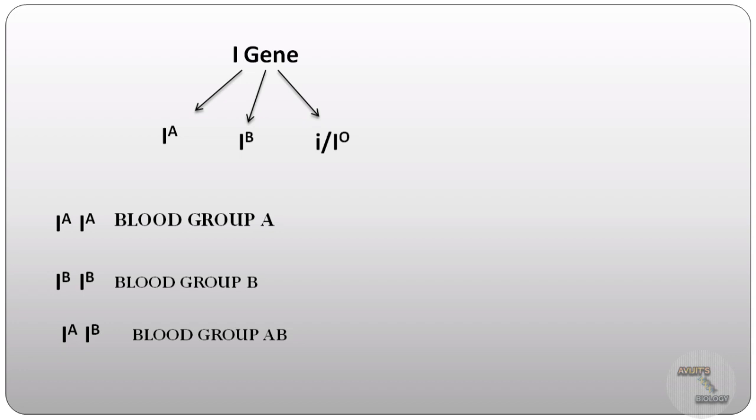And now if these two alleles I^A and I^B are present together, means they are in heterozygotic conditions, means I^A I^B, this will give rise to the blood group AB. And this is the example of co-dominance. Here the two dominant alleles are expressing together.